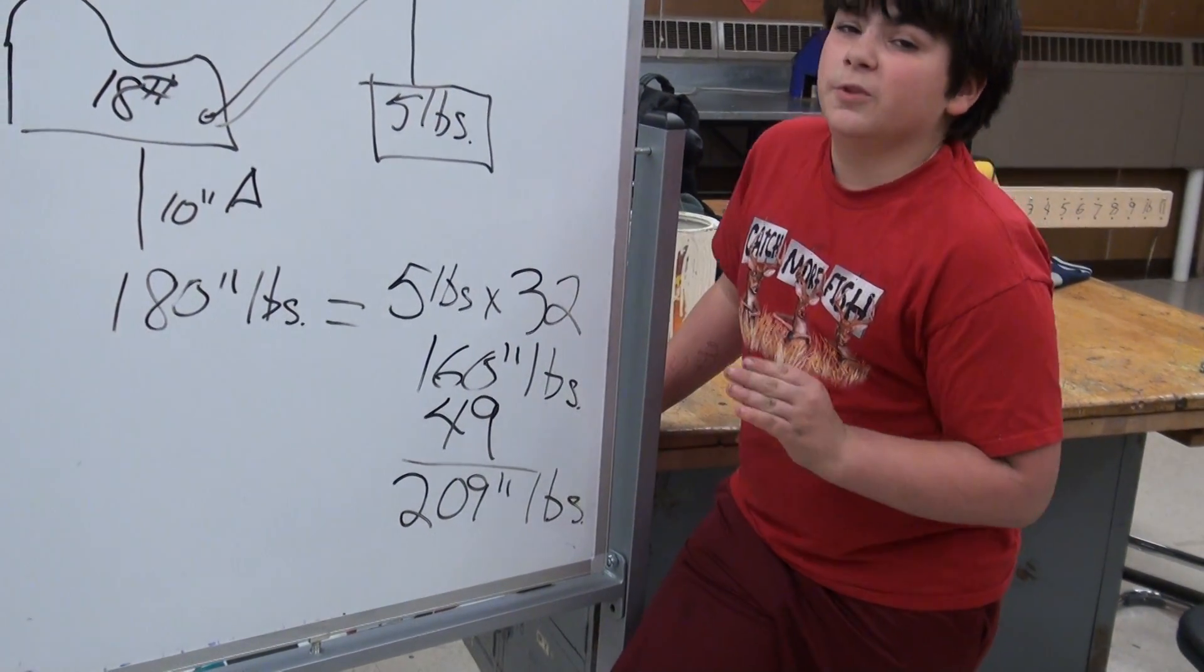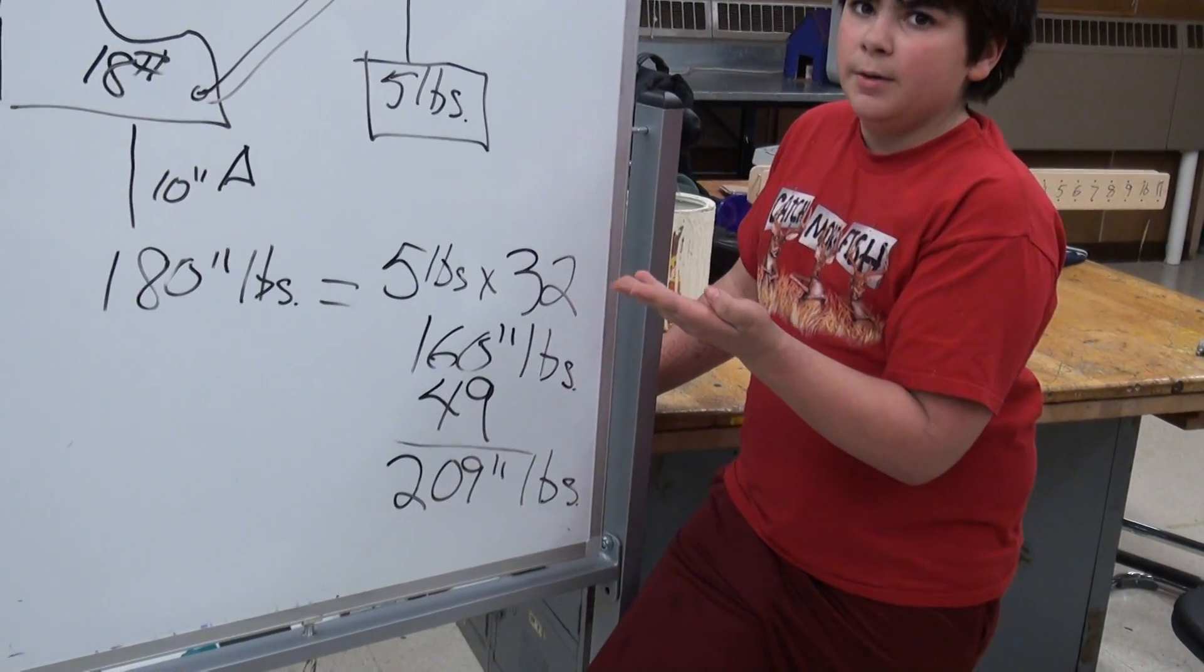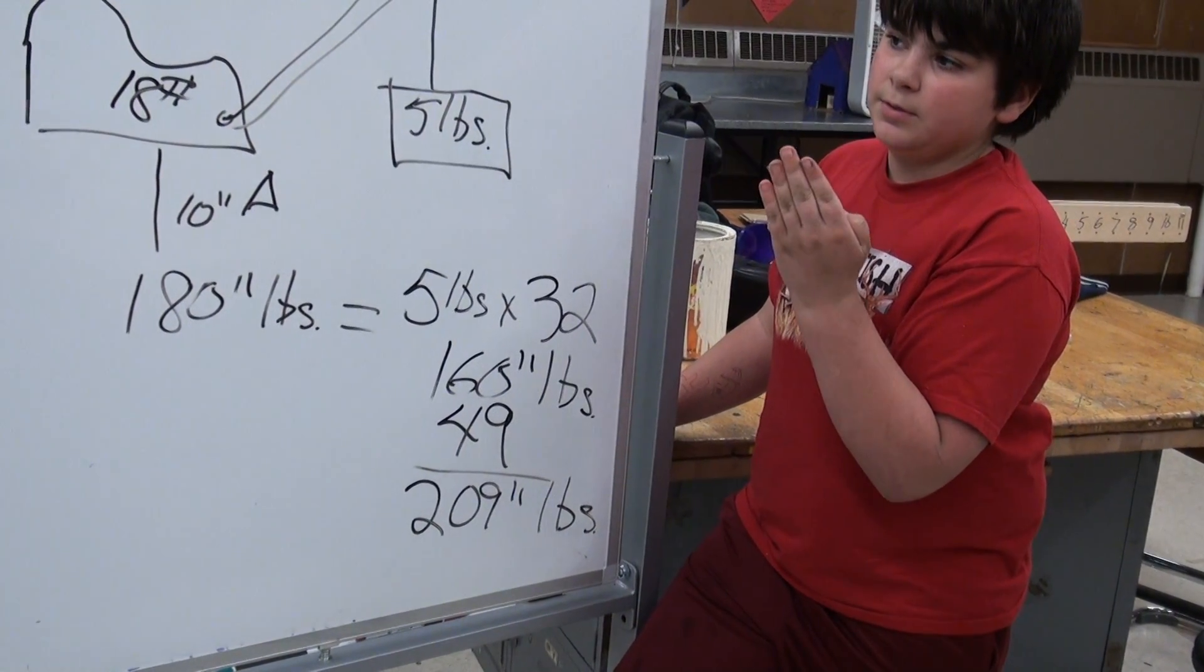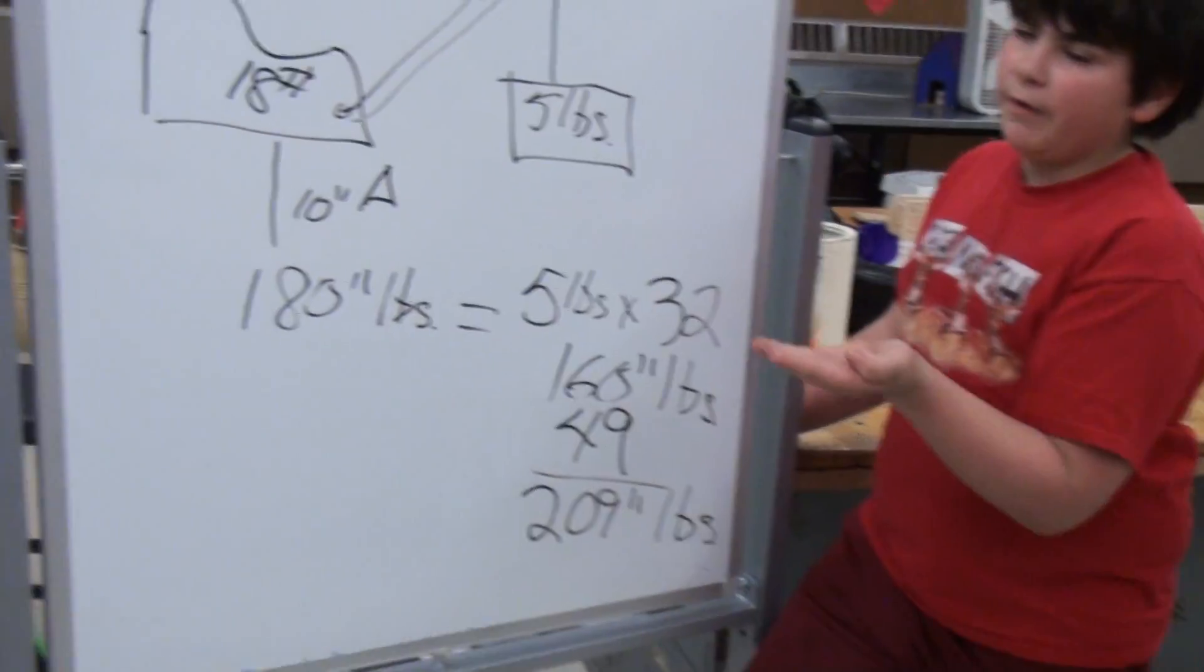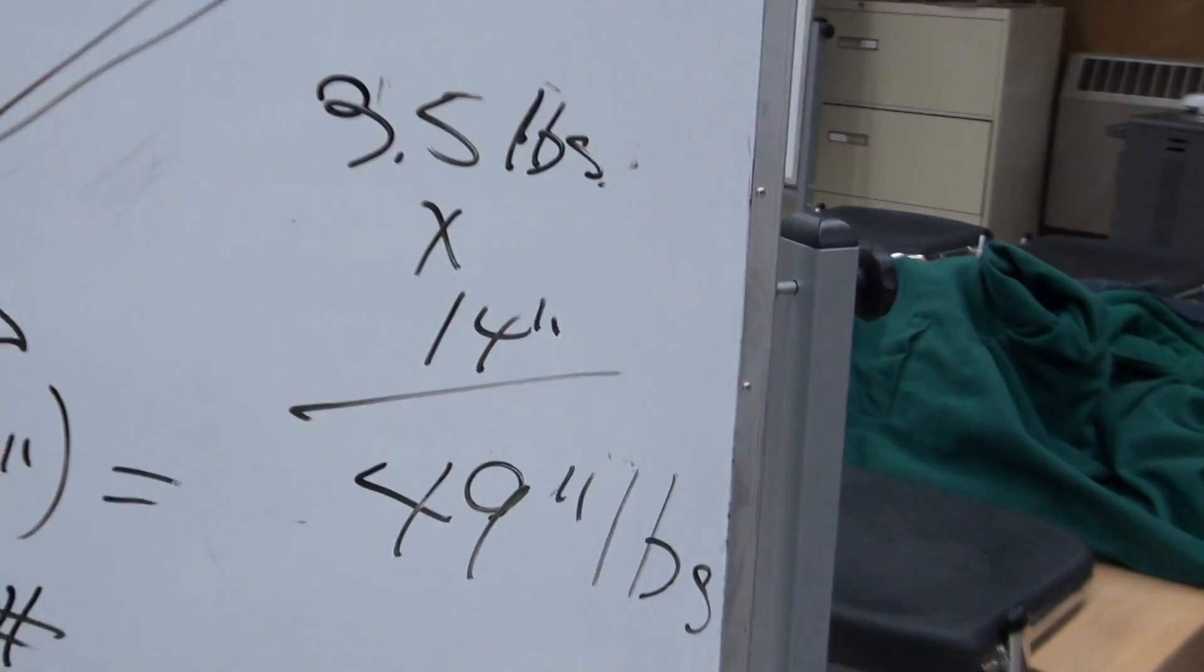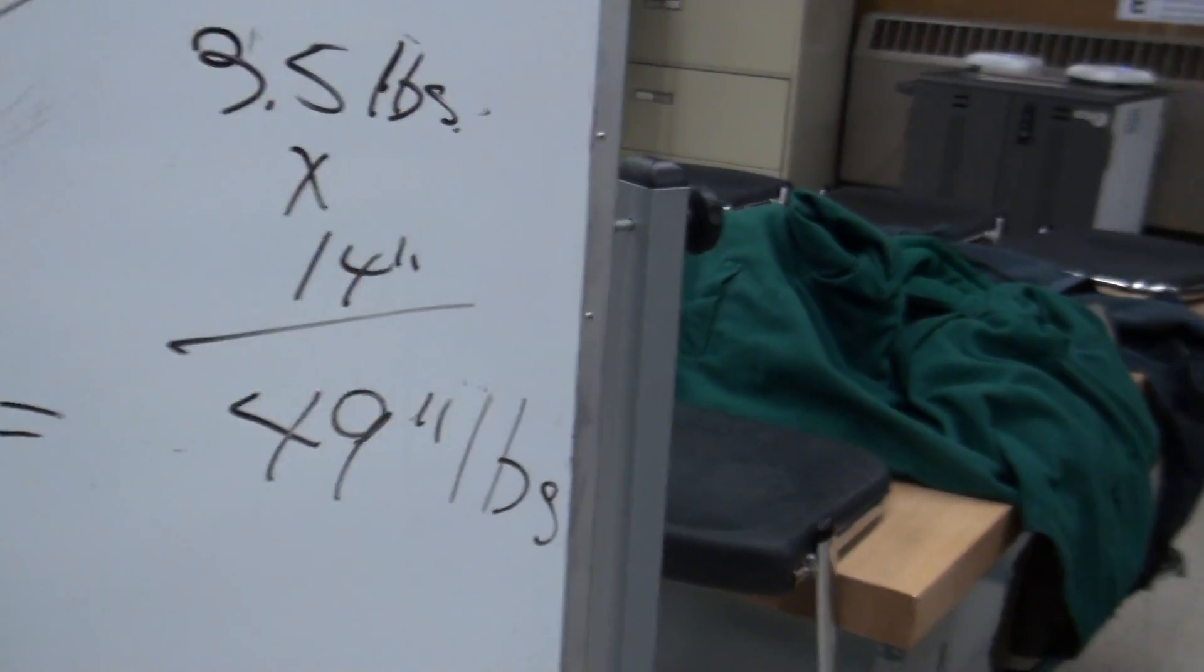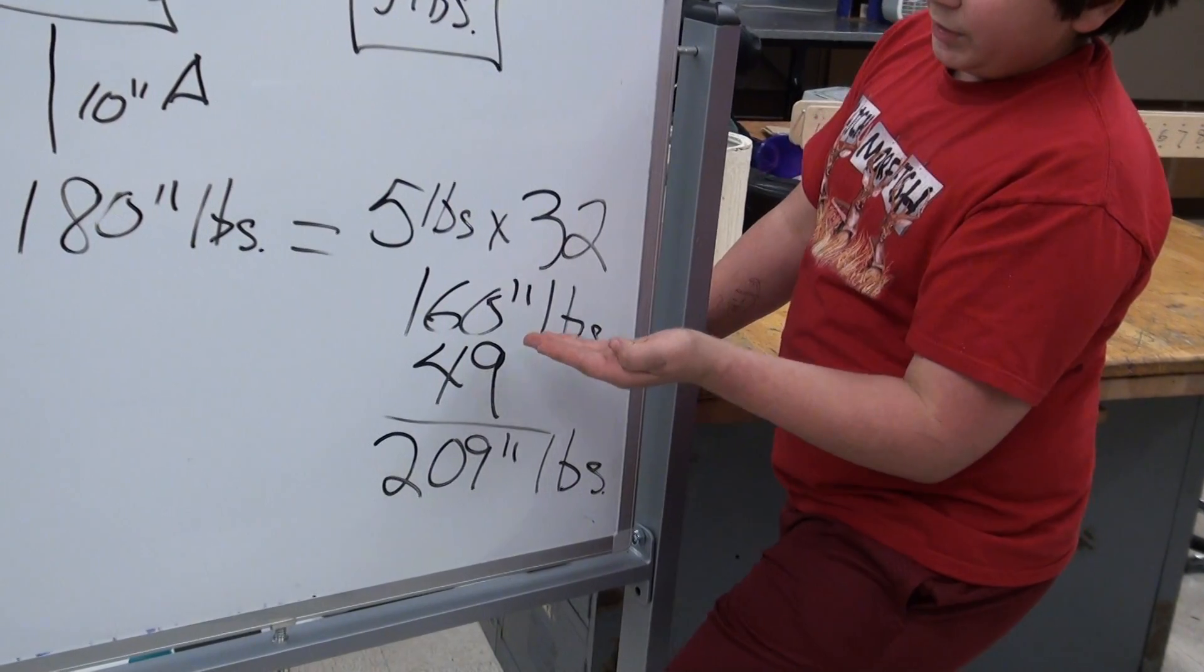But then what we were forgetting was the boom weight, and we had to measure the distance from that. We had to times the 14 inches times 3.5 pounds equals 49 inch pounds. Then we had to add the 49 inch pounds to the 160 inch pounds.